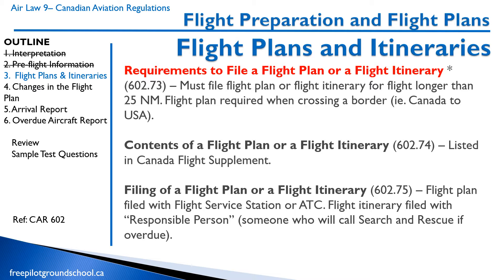A flight plan is always filed with a flight service station or ATC — you either call them up or do it online — whereas a flight itinerary is filed with a responsible person, such as your wife, partner, or another pilot. The major difference is that a flight plan requires you to report back within one hour, whereas a flight itinerary gives you 24 hours. Usually when I go flying, I file a flight itinerary and let my wife know where I'm going and what time I'll be back, with an agreement that if I don't show up, she'll call search and rescue.